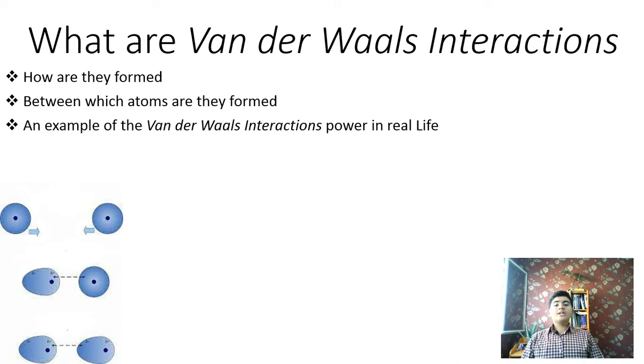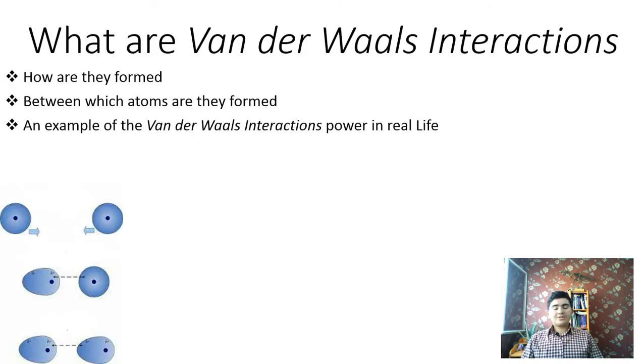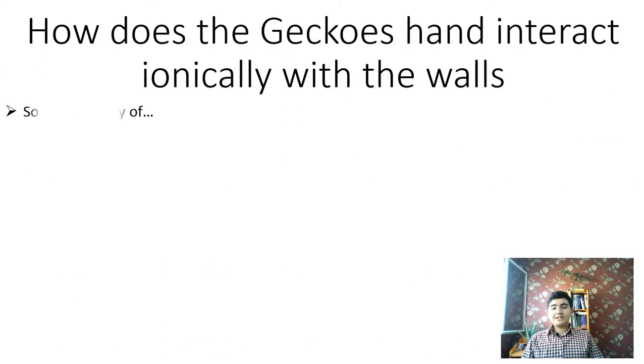These Van der Waals interactions are individually weak and occur only when atoms and molecules are very close together. When many such interactions occur simultaneously, they can be powerful. For example, Van der Waals interactions allow the gecko lizard to walk straight up a wall or hang from the ceiling with one finger.